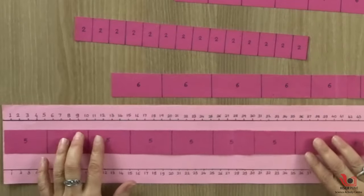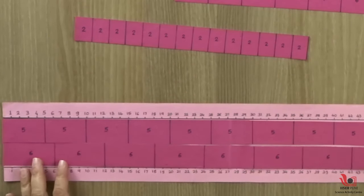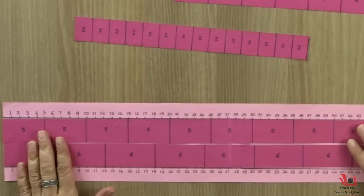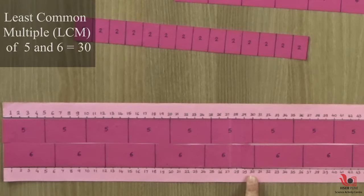Let us try with 5 and 6. Check where the lines are coinciding. They coincide at 30. So 30 is the LCM of 5 and 6.